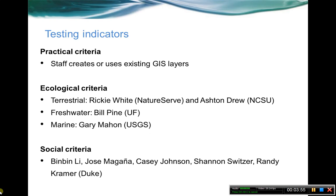The first cut of testing the ecological criteria was split up across three different teams, depending on whether we're talking about terrestrial, freshwater, or marine indicators. For beaches and dunes, that's on the terrestrial side. Ricky White from NatureServe and Ashton Drew from NC State have been working on testing those and how well they capture other components of the ecosystem. We originally were going to hold off on the social criteria, but for a lucky accident, some master's students at Duke in a survey class were actually able to take on some of the social criteria questions as well — thanks to Randy Kramer, the faculty over there.